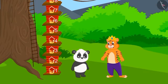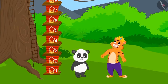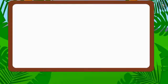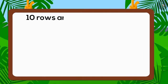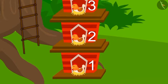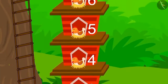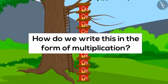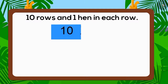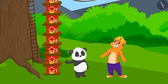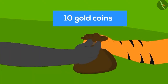Was the house built by Golu correct as per the king's conditions? Was he able to make space for all the hens? In Golu's house there were ten rows and each row had one hen — every row had an equal number of hens. The total number of hens was ten: ten multiplied by one is ten. Golu had built the house perfectly and the king gave ten gold coins as the prize.